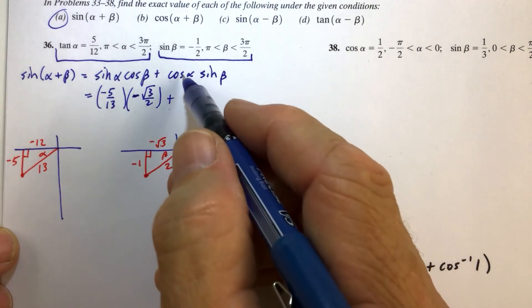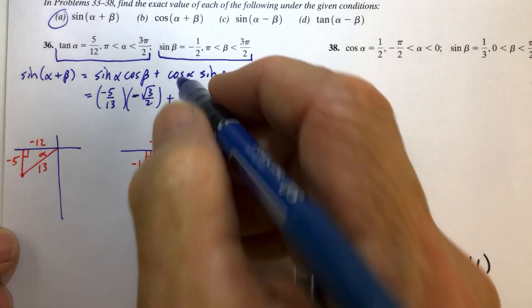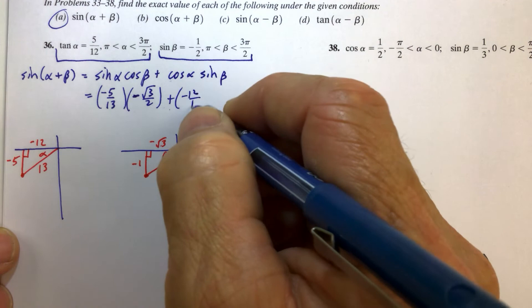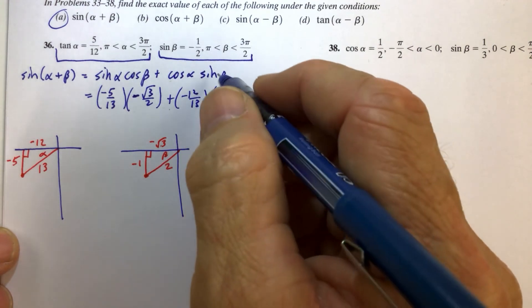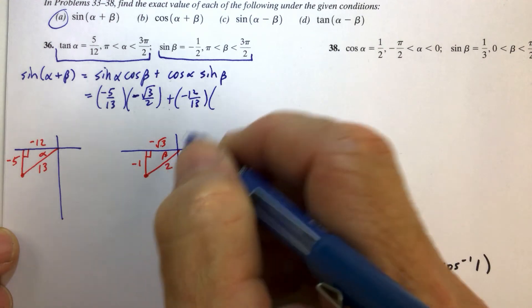And then plus the cosine of alpha is adjacent over hypotenuse, so negative 12 over 13, times the sine of beta. And we were given that, or we could just look over here again, opposite over hypotenuse.